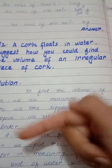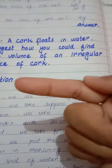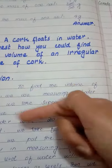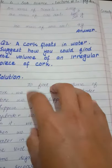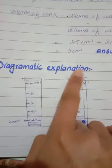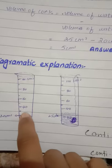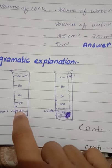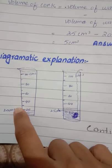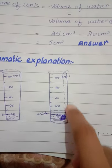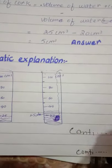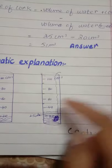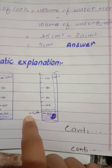Irregular shape کا volume find کرنے کے لیے ہمارے پاس ایک measuring instrument ہے جو ہے measuring cylinder۔ ہم measuring cylinder میں water لیں گے اور اس پر initial reading لیں گے۔ Diagrammatic explanation میں ہم نے measuring cylinder میں water لیا، initial reading 20 cubic centimeter آئی۔ Cubic centimeter جو ہے volume کا unit ہے۔ پھر cork کو water کے اندر ڈالا تو water کا level تھوڑا بڑھ گیا، اور final reading 25 cubic centimeter آئی۔